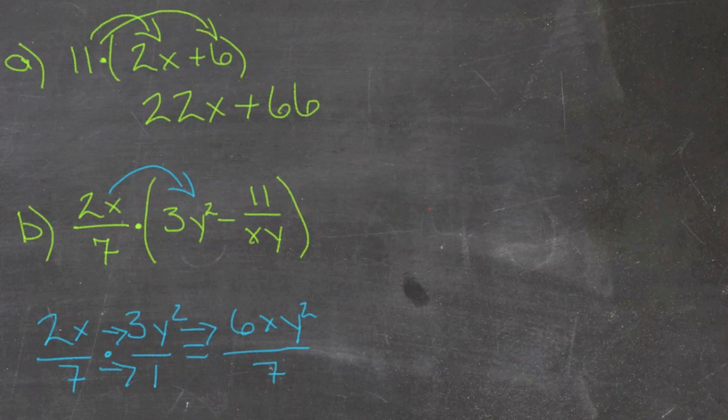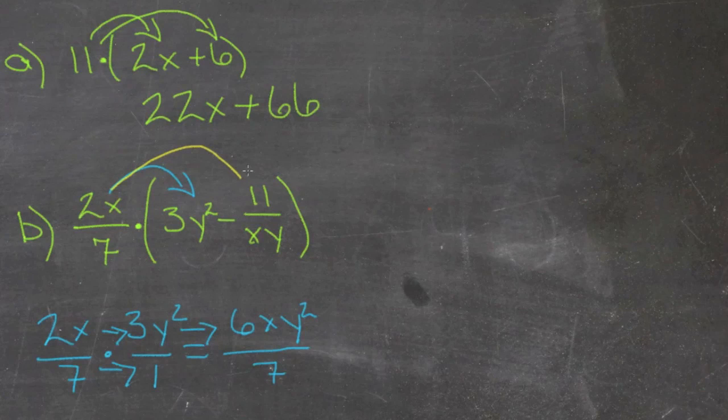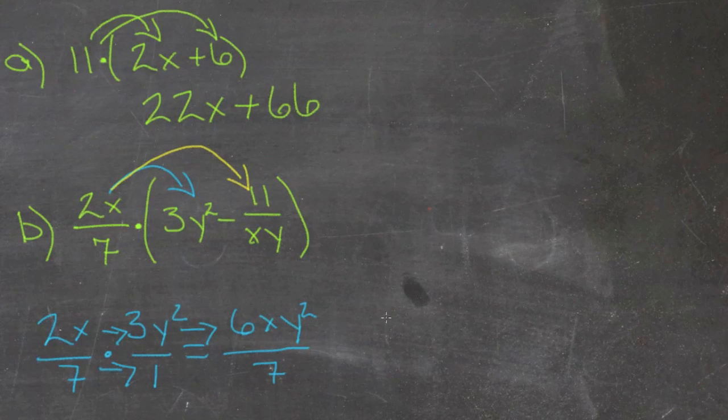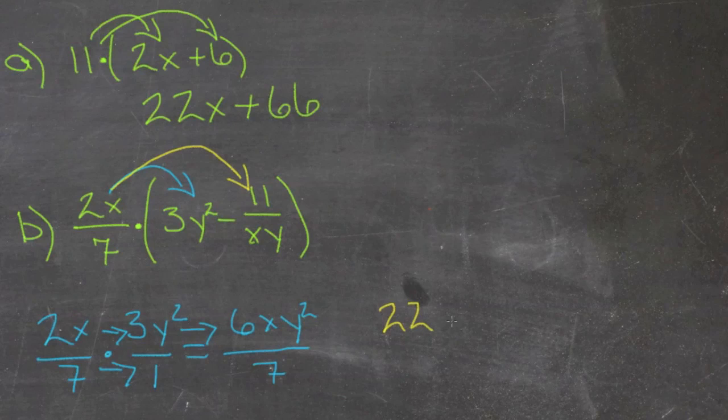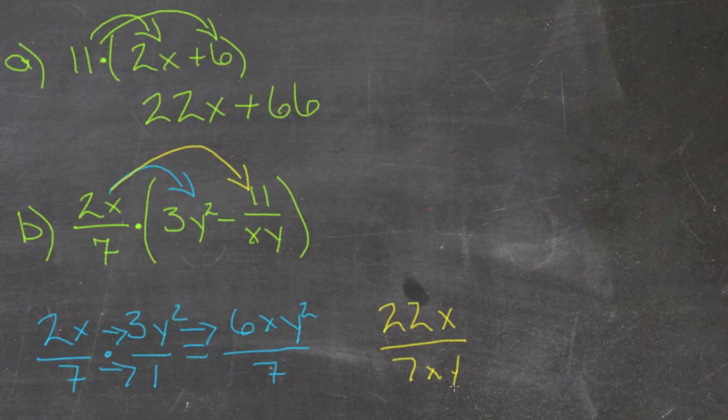And then we have the 2x over 7 times negative 11 over xy. That's going to give us 2 times 11 is 22x over 7xy. And since we had a positive times a negative, we're going to end up with a negative as our fraction.